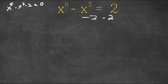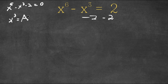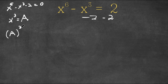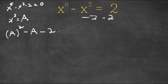So now what I'm going to do is I'm going to let the variable x to the power of 3 equal a. So now if I plug in a into this equation for x to the power of 3, we get a squared — because x to the power of 3 squared is x to the power of 6 — minus a minus 2 is equal to 0.